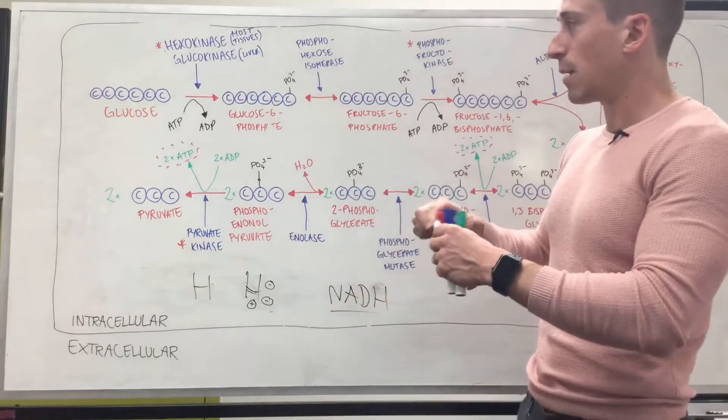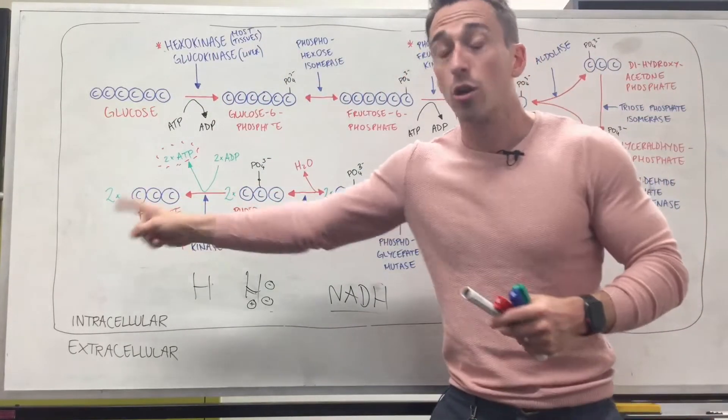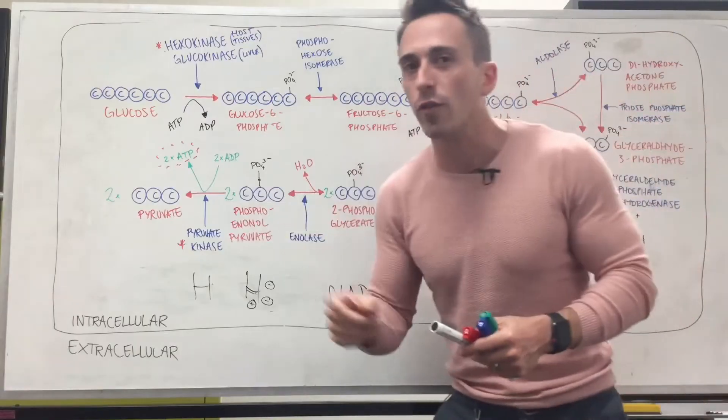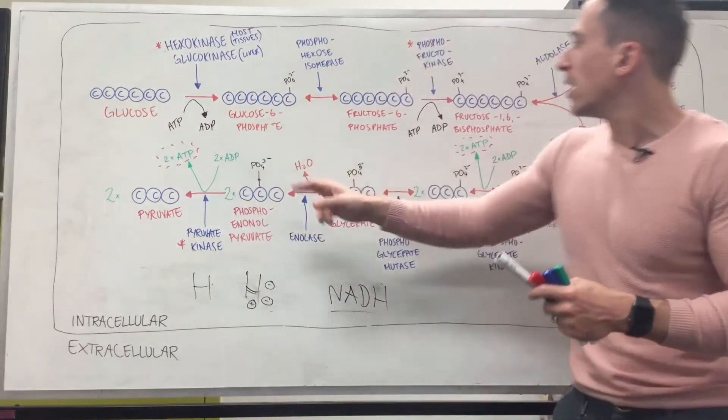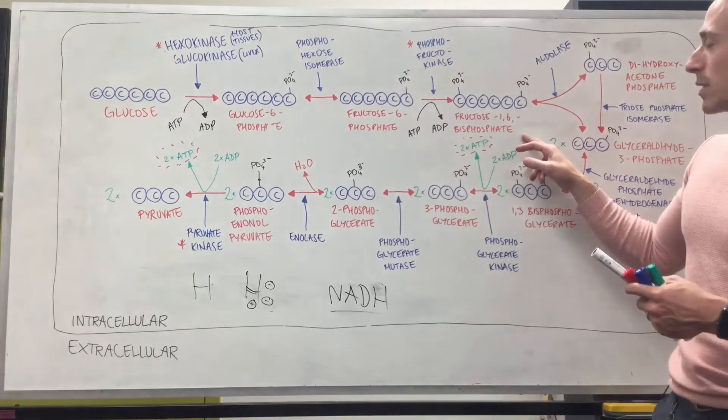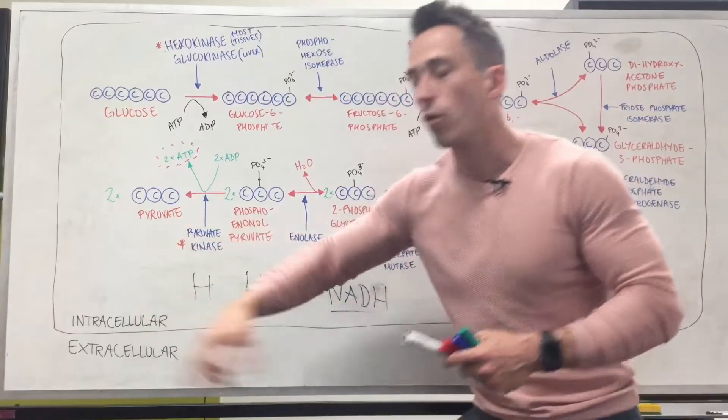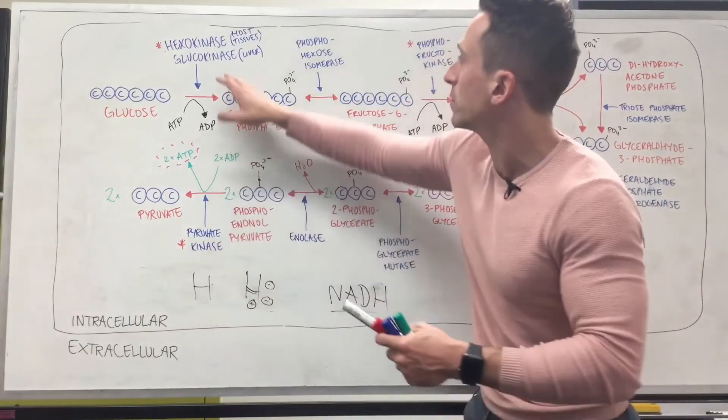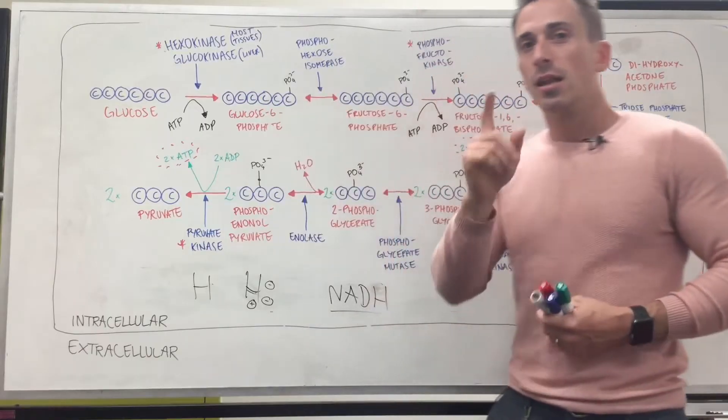All right, next step is this. This is predominantly reversible, but there's some steps that are irreversible. This first step is irreversible from glucose to glucose 6-phosphate. From fructose 6-phosphate to fructose 1,6-bisphosphate is irreversible. And the last step from phosphoenolpyruvate to pyruvate irreversible, which means the enzymes are very important and they're the rate limiting steps for glycolysis. Let's take a quick look, right?